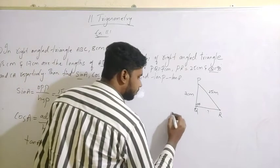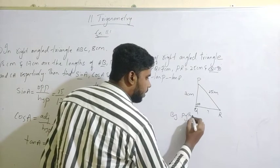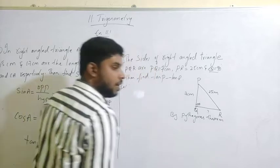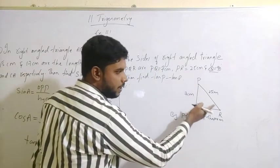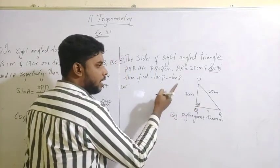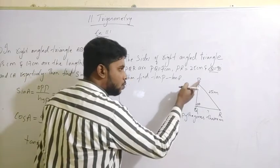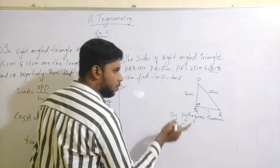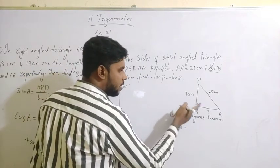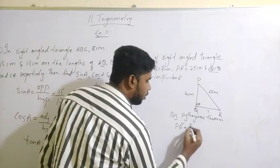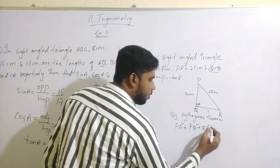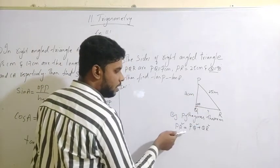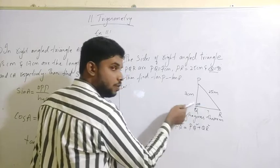We find the third side by applying the Pythagoras theorem. The Pythagoras theorem states that the square of the hypotenuse is equal to the sum of the squares of the other two sides. So PR square is equal to PQ square plus QR square.